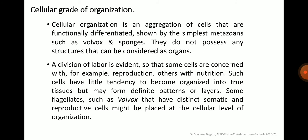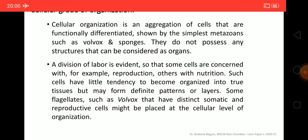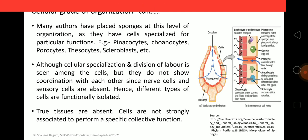Next, what is cellular grade of organization? A cell is the basic structural and functional unit of life. Cellular organization is an aggregation of cells that are functionally differentiated, shown in the simplest metazoans such as Volvox and sponges. They do not possess any structures that can be considered as tissues or organs. A division of labor is evident so that some cells are concerned with reproduction and others with nutrition. Some flagellates such as Volvox that have distinct somatic and reproductive cells are placed at the cellular level of organization.